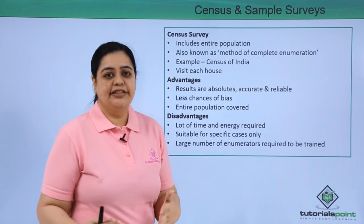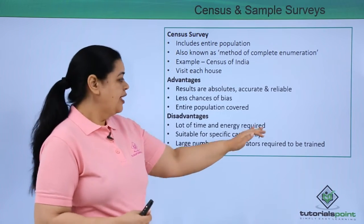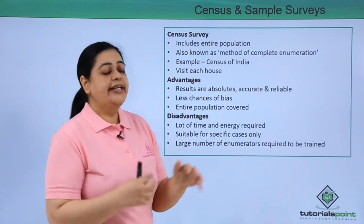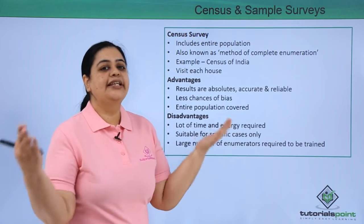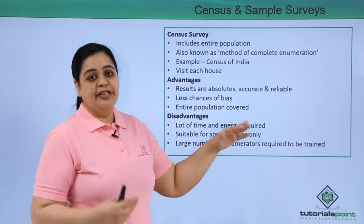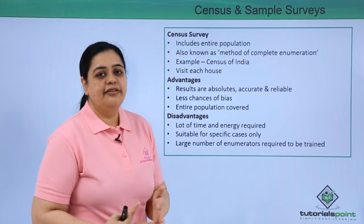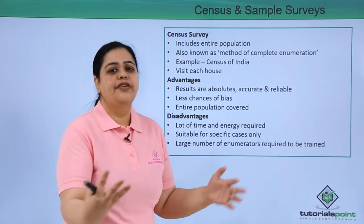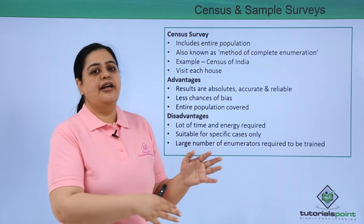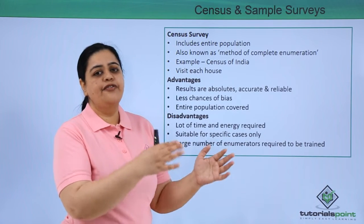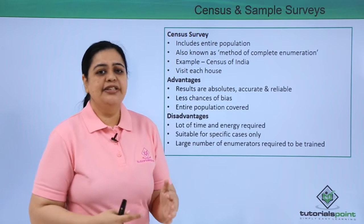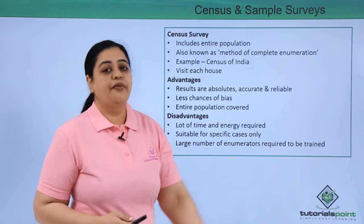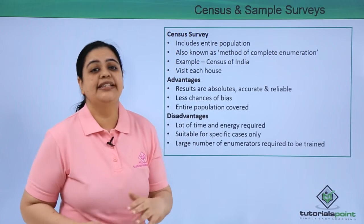The disadvantages of census survey are that a lot of time and energy is consumed in collecting data from each household. It is only suitable in specific cases — for example, the Indian government uses it because they want to collect data for the entire population. However, for something like finding average car preferences, you can rely on sampling instead. Also, a large number of enumerators need to be trained when conducting a census survey.